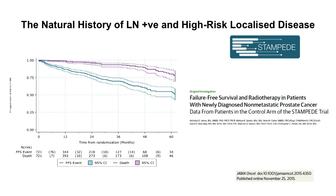At the time of 2018–2019, this was the standard of care. Looking at natural history in lymph node positive and high-risk localised disease — from Stampede, published in 2015, on a substantial number of patients from the control arm — about one in five patients die of their disease by five years, and about 50% will have failed either clinically, biochemically, or both within that time period.